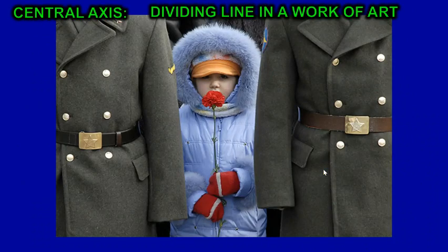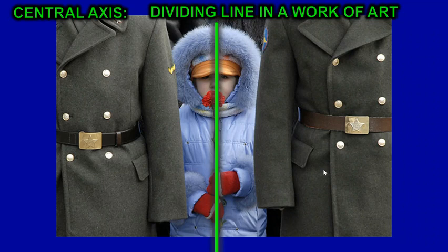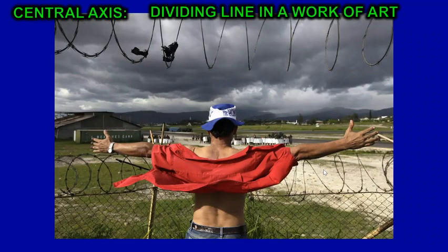But the downside of symmetry is that it can be predictable, boring, or dull. Looking at some photos and artwork showing symmetry, you can imagine a line going down the center of a photograph and it's almost a mirror image on both sides — that's what gives it symmetry. There's a lot of photography that is symmetrical.